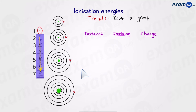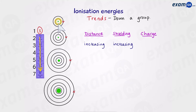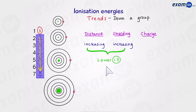To answer the question, we're going to refer to distance, shielding, and charge. As we go down the group, the distance between the outermost electron and the nucleus is increasing. In terms of shielding, as you go down the group, there's more shielding. For example, in the first element we have one shell between the nucleus and the outermost electron; in the second, two shells; three in the third; and four in the fourth. So the pattern is that the lower you go, both distance and shielding increase, meaning the ionization energy should become lower.